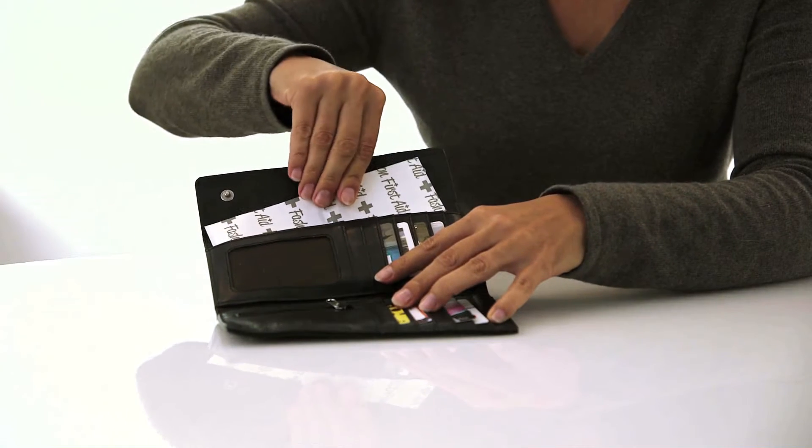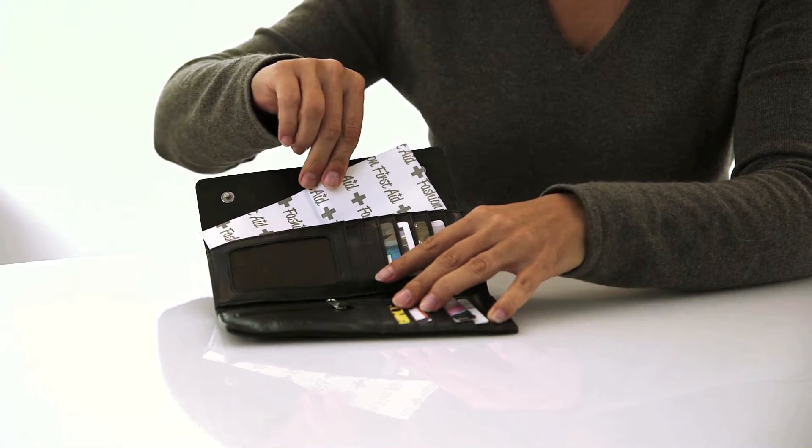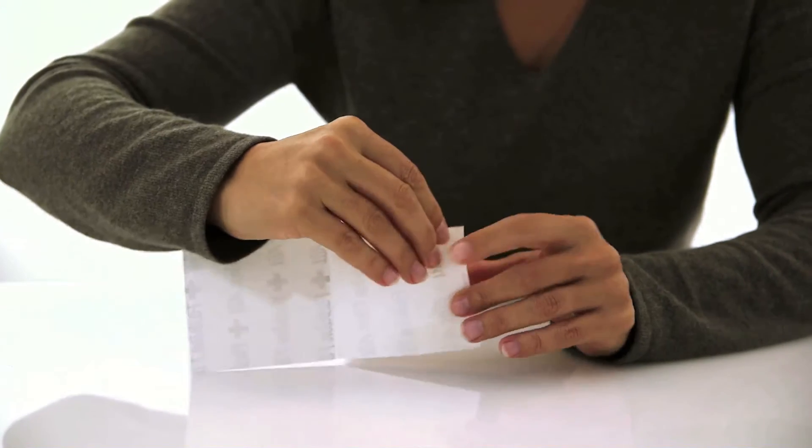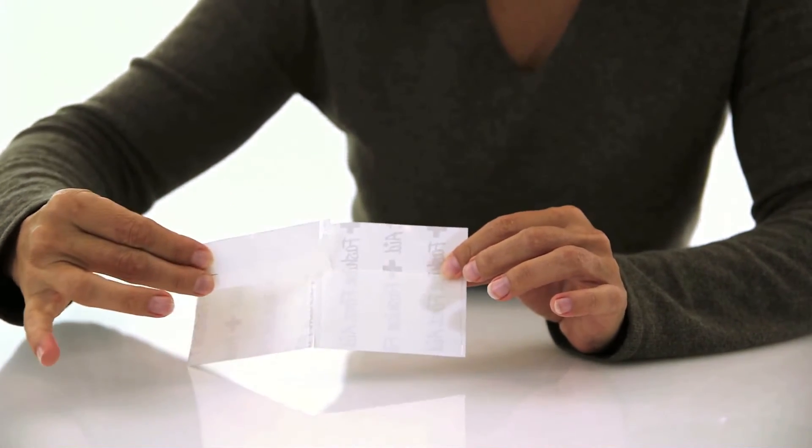Each package comes with two dollar bill-sized perforated sheets so they're easy to keep in your wallet and so you can customize the length and width for every possible wardrobe malfunction.